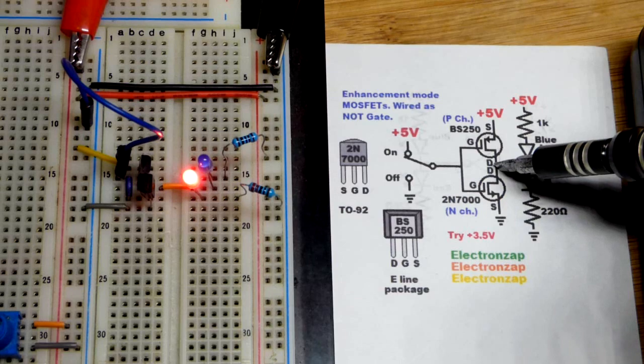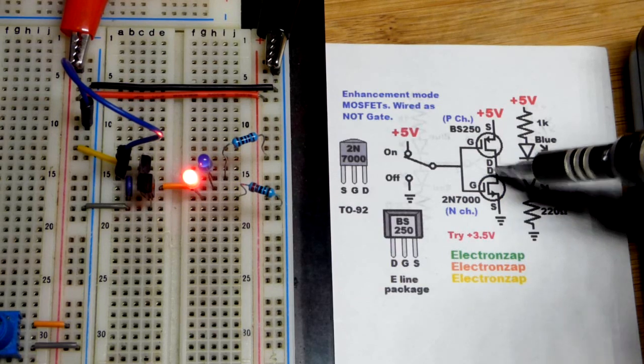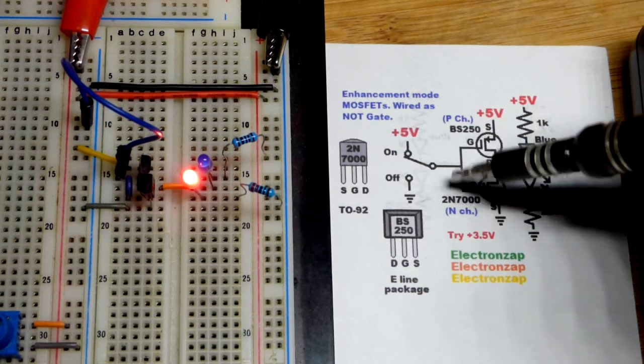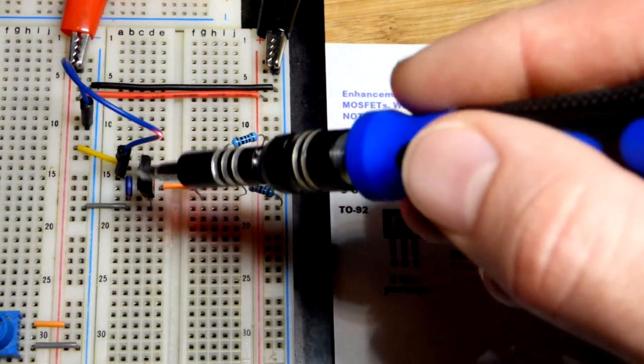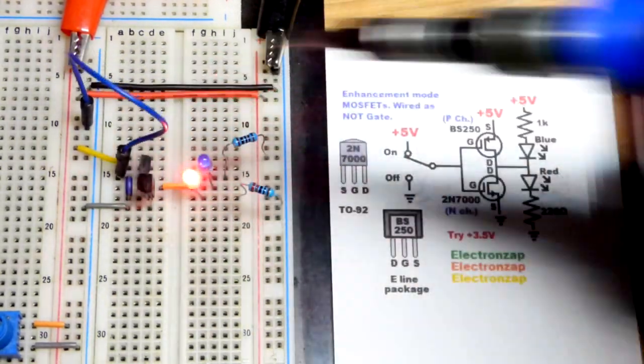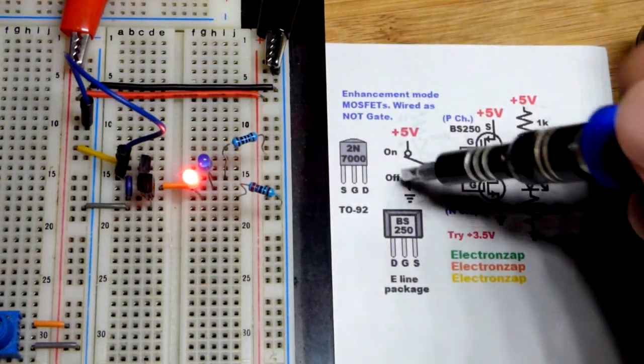In a way they're connected in series, their drains are connected directly together. The gates though, we have connected to this little jumper there so that we can provide a signal voltage.